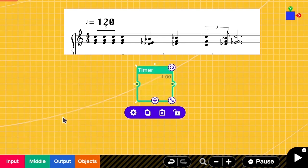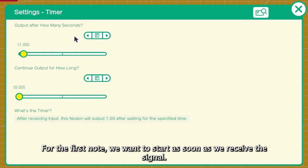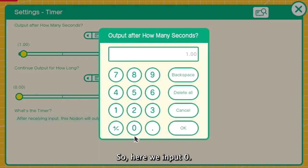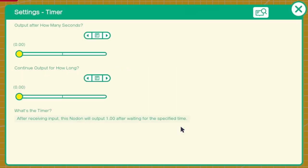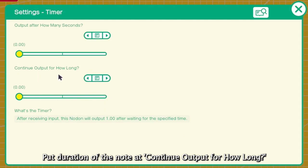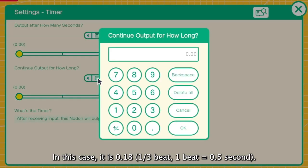Let's add the timer. And for the first note, we want to start playing it as soon as we have received the signal. So here, we input 0. Continue output for how long? This is the duration of the note. In this case, it is 0.18.